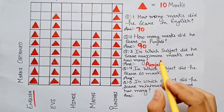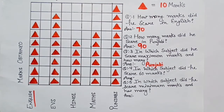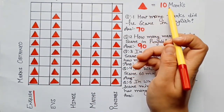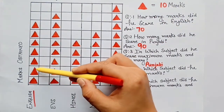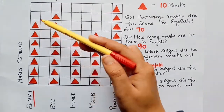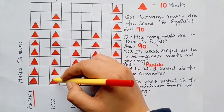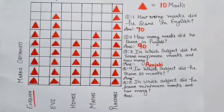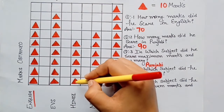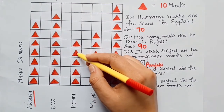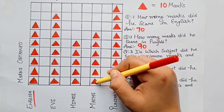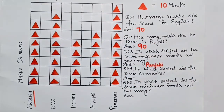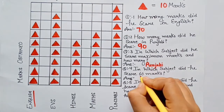Now the fourth question: in which subject did he score 60 marks? Ab humein dekhna hai ki usne kaun se subject mein 60 marks liye hain. Each triangle equals to 10 marks. English mein 70, EBS mein 80, Hindi mein 50. Maths mein count karte hain: 10, 20, 30, 40, 50, 60. So here we got the answer — usne 60 marks Maths mein liye hain. The answer is Maths.